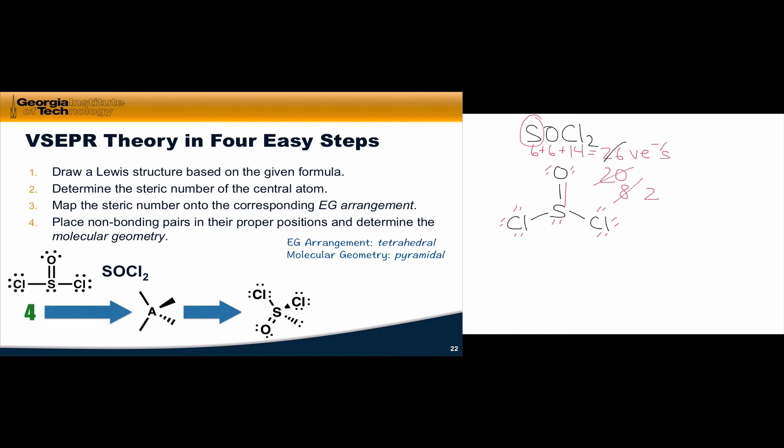The final step is to place non-bonding lone pairs in their proper positions and determine the molecular geometry. We can put the single lone pair on the sulfur in any of the four positions. Here, I've put it in the dash position, and I've put the two chlorines in two of the other positions, and the oxygen in the final one to generate the overall structure. Since this structure has three bonding electron groups and one non-bonding group, it has a pyramidal molecular geometry.